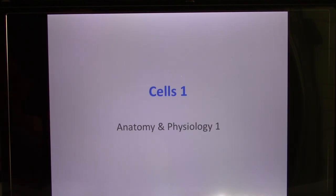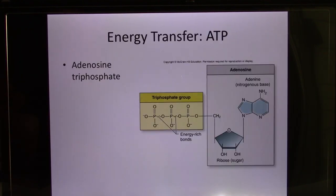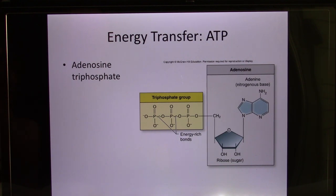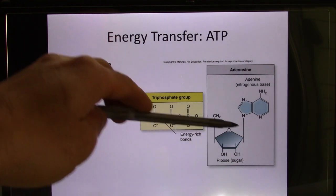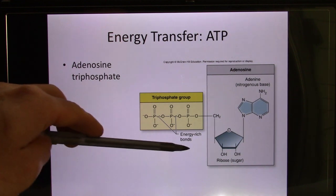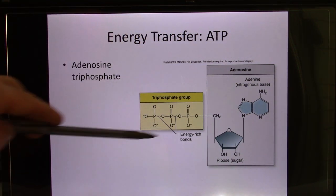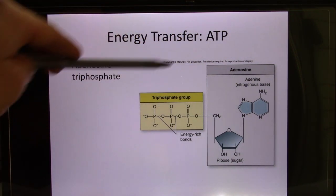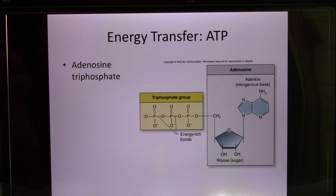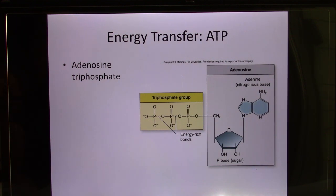What is in the cell? ATP is the energy source used by the cell. It is made of sugar ribose, adenine, a nitrogenous base, and the triphosphate group — 3 phosphates. This is why it's called ATP.